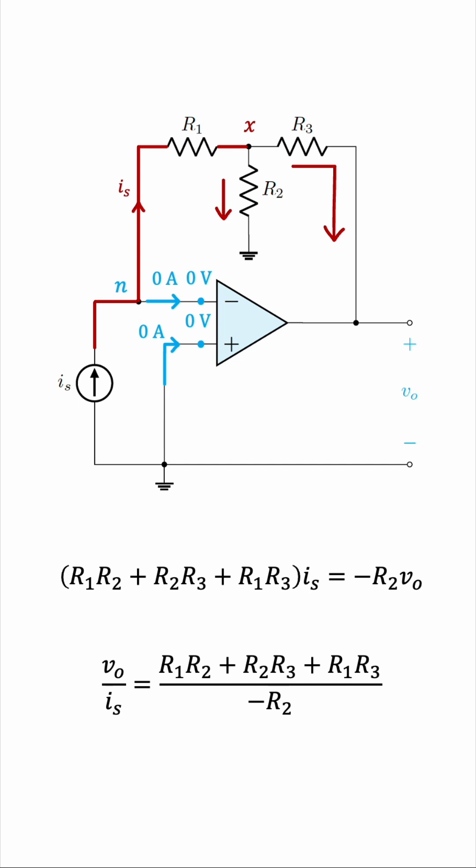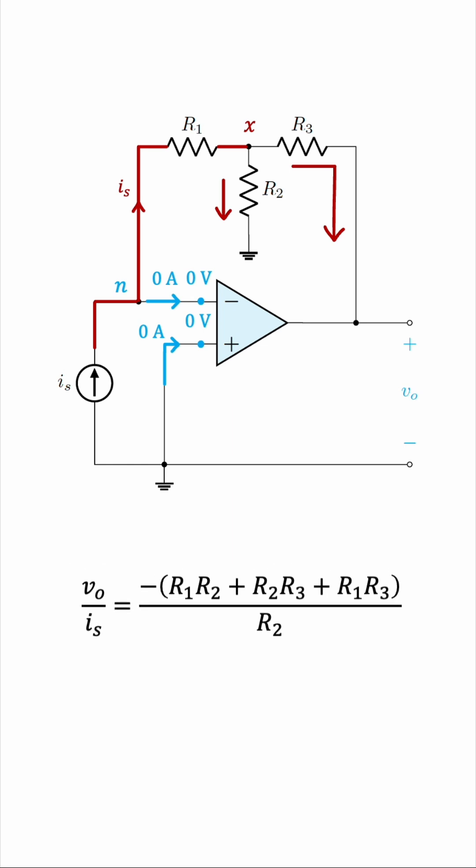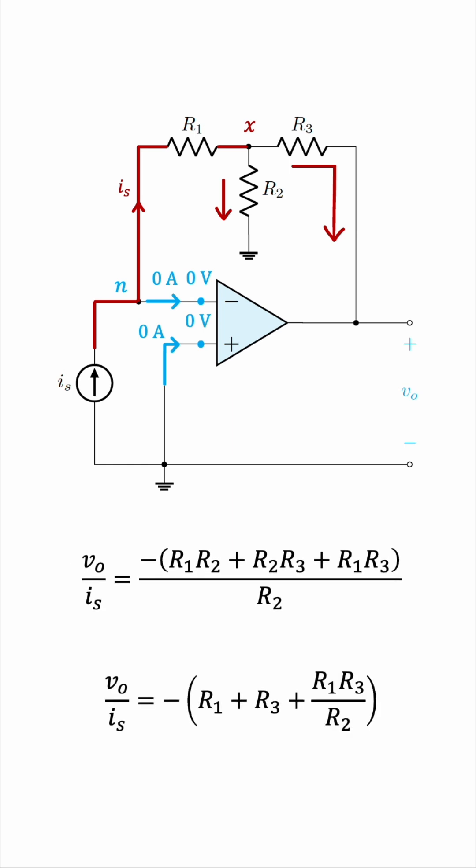But we want to find the ratio, so there's still a little bit of math to do. Let's cross multiply, and then we can divide both sides by negative R2 as well as IS, so that we have V0 over IS on one side, and all the resistors on the other side. That's it. This is the ratio. Now we have a negative sign in the denominator. Let's bring it to the numerator, like this. Now notice two of the three terms in the numerator have an R2. So we can simplify this with the denominator a little bit. The simplification will be V0 over IS is equal to the negative of R1 plus R3 plus R1 R3 over R2.